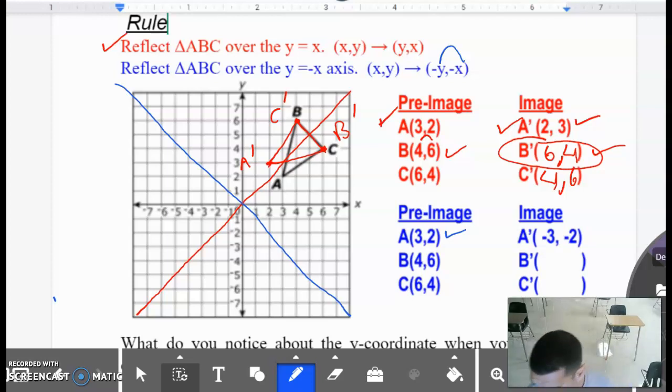I've already done A for you. Now look at B. B will become negative six comma negative four. And then C will become negative four comma negative six. That's what it becomes. So now let me go ahead and draw them.